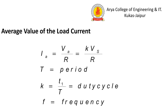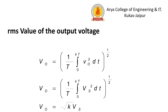The average value of load current is given by I = Va/R, where Va = K·Vs/R, and K is the duty cycle defined as T1/T. Here T is the time period and F is the frequency. The duty cycle K equals T1 divided by T.